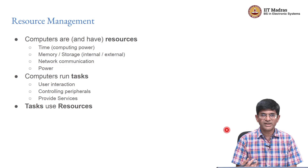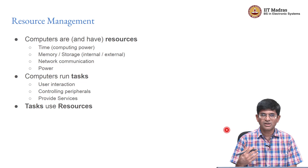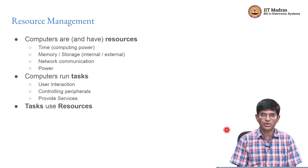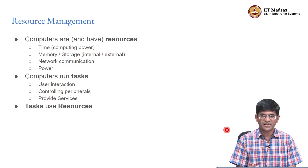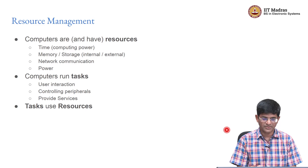The faster a computer is, it means that within a given amount of time, the more operations or instructions it can execute, and therefore the more useful work it can do. But in order to do work, it needs to store data somewhere, and that means the memory available to it is also a resource that we need to manage carefully.